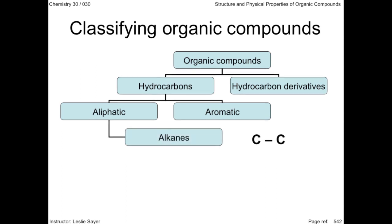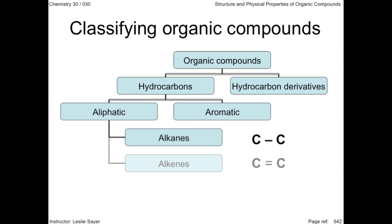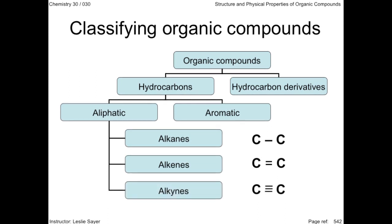There are three subcategories of aliphatic molecules. The first are the alkanes, where a single bond exists between the carbon atoms. Alkenes have double bonds between the carbons. And alkynes have a triple bond between the carbon atoms.